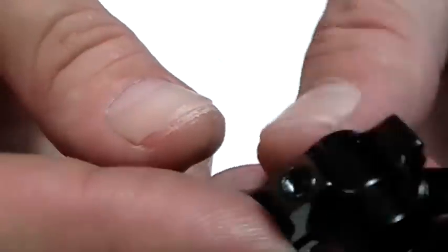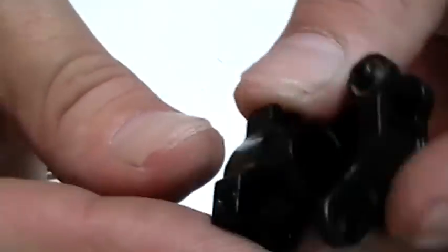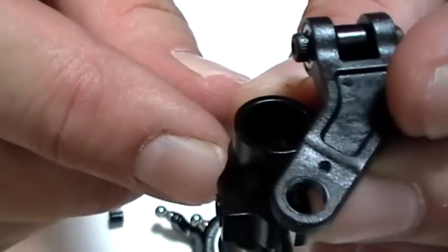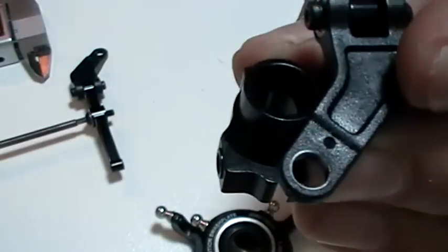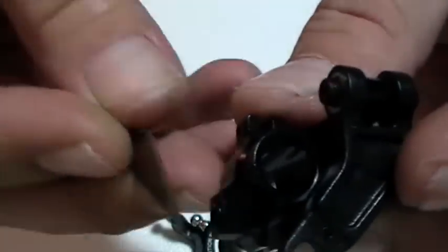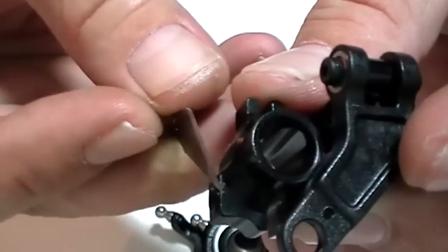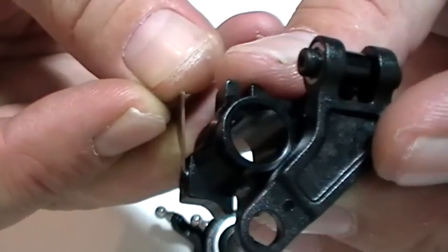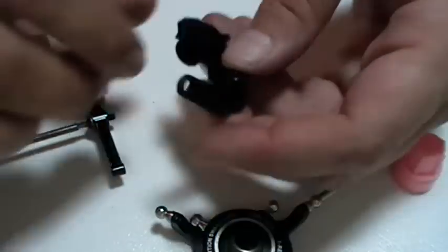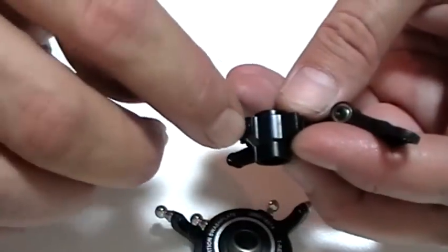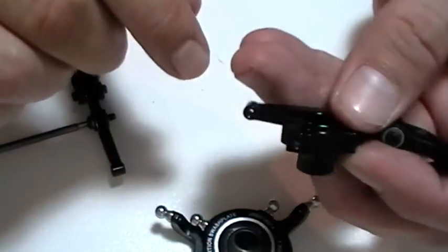Now right here I was looking for a washer but there is no washer, but you can see that there's a raised edge right in there. So again I'm going to put Loctite in there and make sure I don't get any Loctite on the outside.